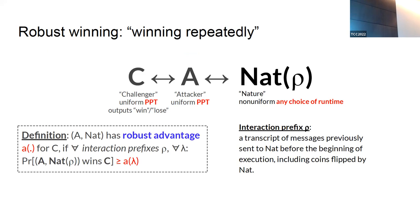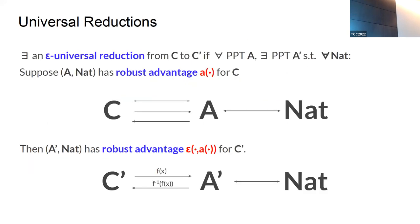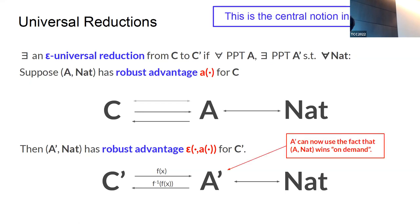The main notion in our paper — universal reductions: there exists an ε-universal reduction from C to C-prime if for all PPT attackers A there exists a PPT attacker A-prime such that for all natures, if (A, Nat) has robust advantage α for security game C, then (A-prime, Nat) has robust advantage ε for C-prime. Critically, it is the same Nat in both cases, and A-prime can exploit the fact that (A, Nat) wins on demand.